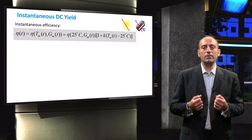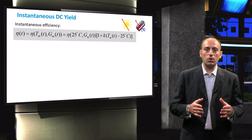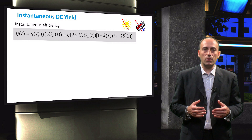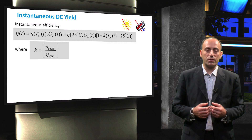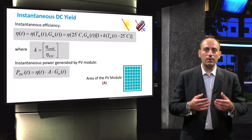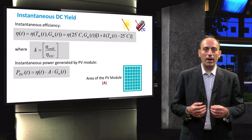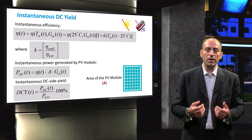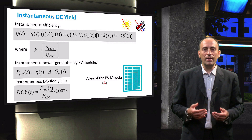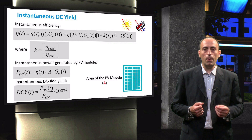We can now finally determine the DC electricity yield of the PV module. To that end, we start with the calculation of the instantaneous efficiency using this equation, which takes into account the effects of both the irradiance and temperature of the PV module. The temperature coefficient of the PV module is represented by the constant K. With the instantaneous efficiency, we can then obtain the instantaneous power output of the module PDC, by multiplying the efficiency by the corresponding instantaneous irradiance GM. Finally, the instantaneous DC yield DCY of the PV module is calculated by dividing the instantaneous power PDC by the nominal power PSTC of the PV module. The calculations of VMP, efficiency, DC power, and DC yield are important steps in designing a PV system and will be used in later videos covering detailed design strategies for both grid-connected and stand-alone PV systems.